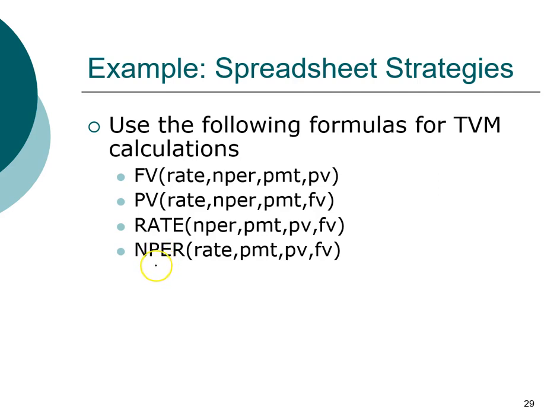Rate is the interest rate, NPER is the investment horizon, and of course FV is future value and PV is present value. The formula is very useful instead of having to memorize the exact formula.